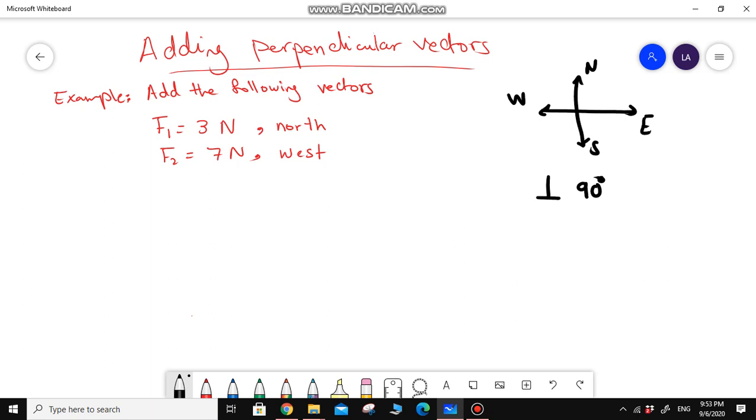If you take a look at the coordinate system or the directions, you can see that the north and the east directions are perpendicular. They make 90 degrees.